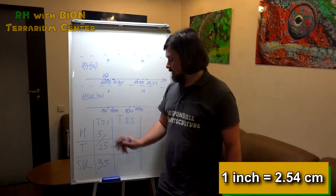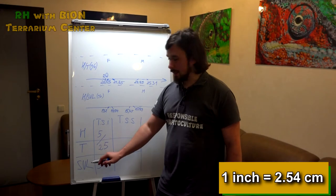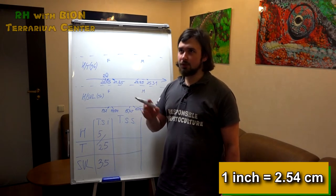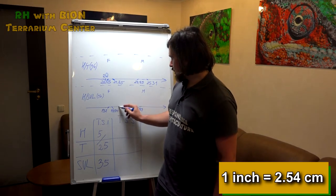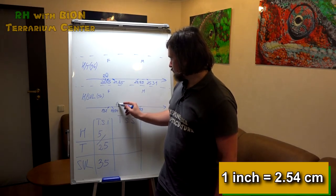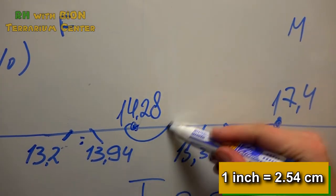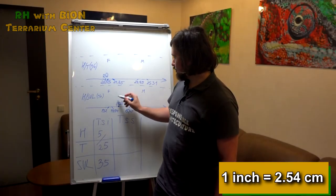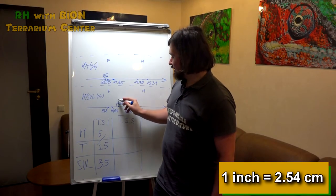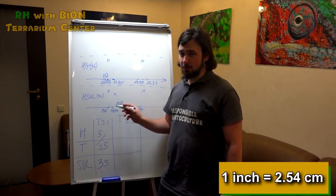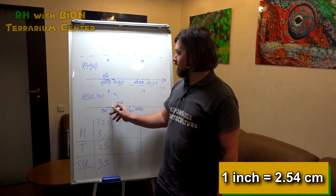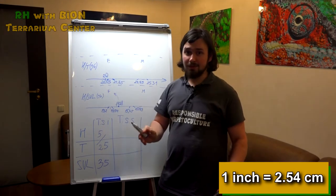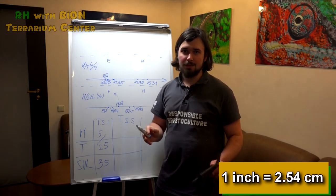Now let's divide head width by snout vent length. So five divided by 35, we got about 14.28, which goes somewhere here. And this figure lies closer to a female proportion, so it's more likely that this is a female. So in both cases our proportions went to these indexes which are typical for female. I think that our Tiliqua scincoides intermedia is a female.